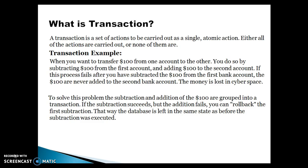If the subtraction succeeds but the addition fails, you can roll back the first subtraction. That way the database is left in the same state as before the subtraction was executed. So this is one of the best examples of a transaction.